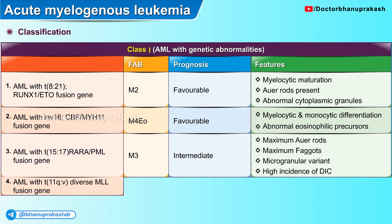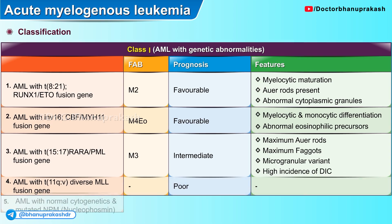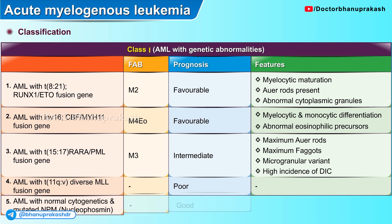The fourth variant is AML with inversion 11q, which results in a diverse MLL fusion gene with a poor prognosis. The fifth variant is AML with normal cytogenetics and a mutated NPM gene, which codes for nucleophosmin. This variant usually has a better prognosis.